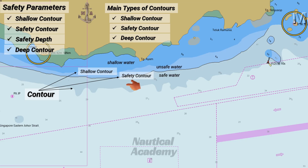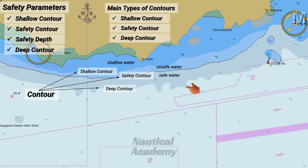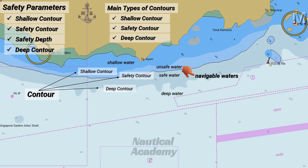Meanwhile, the line that separates the gray and white zones is the deep contour. It marks the division between safe water and deep water. Vessels must remain within the gray and white shaded areas, as these represent the navigable waters.